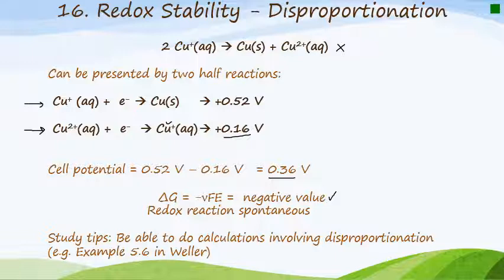You need to be able to do calculations that involve disproportionation. One of the applications of this section on redox stability is to practice examples. There are two examples in the textbook: example 5.6 and self-test 5.6. Go ahead and practice those.